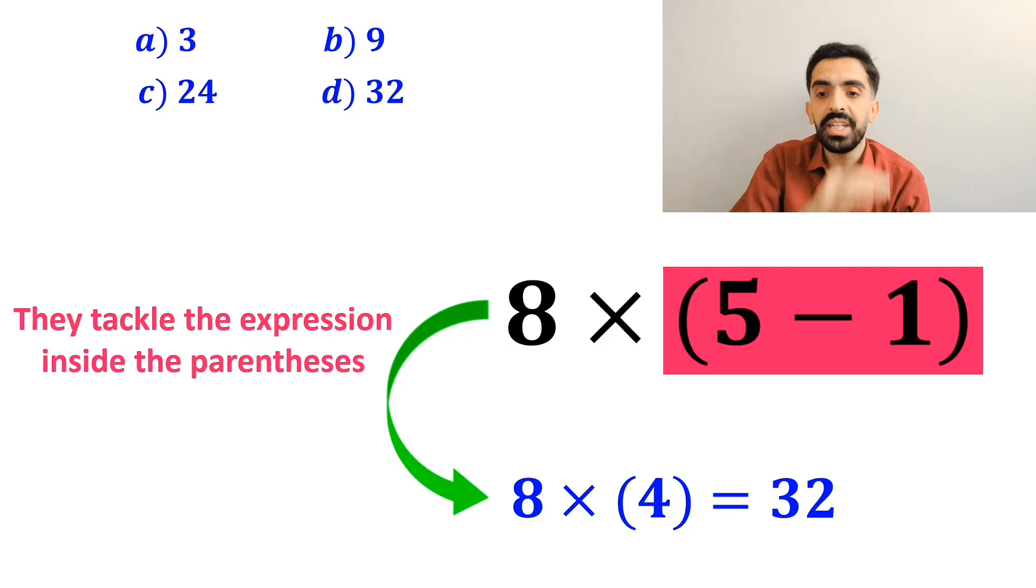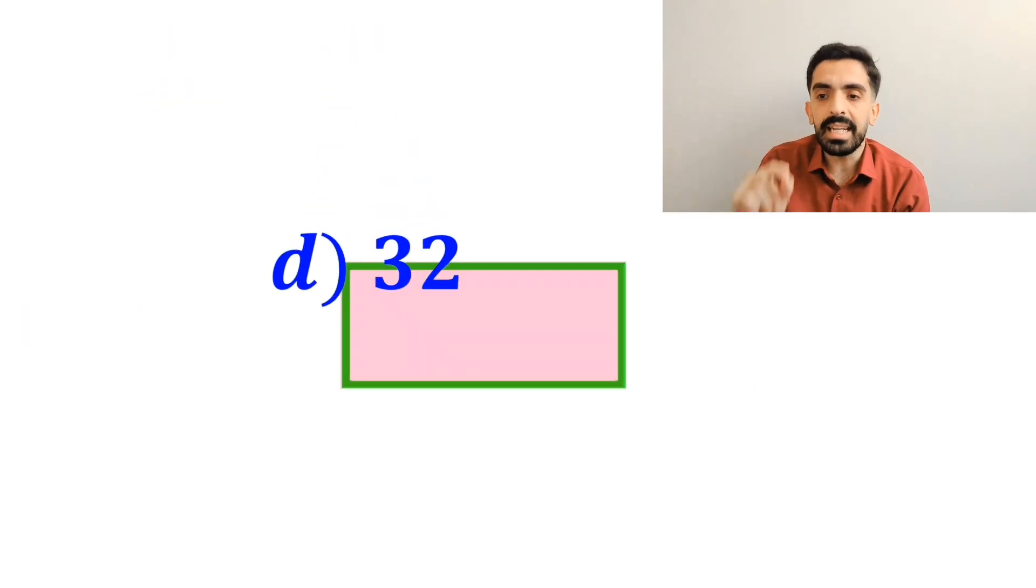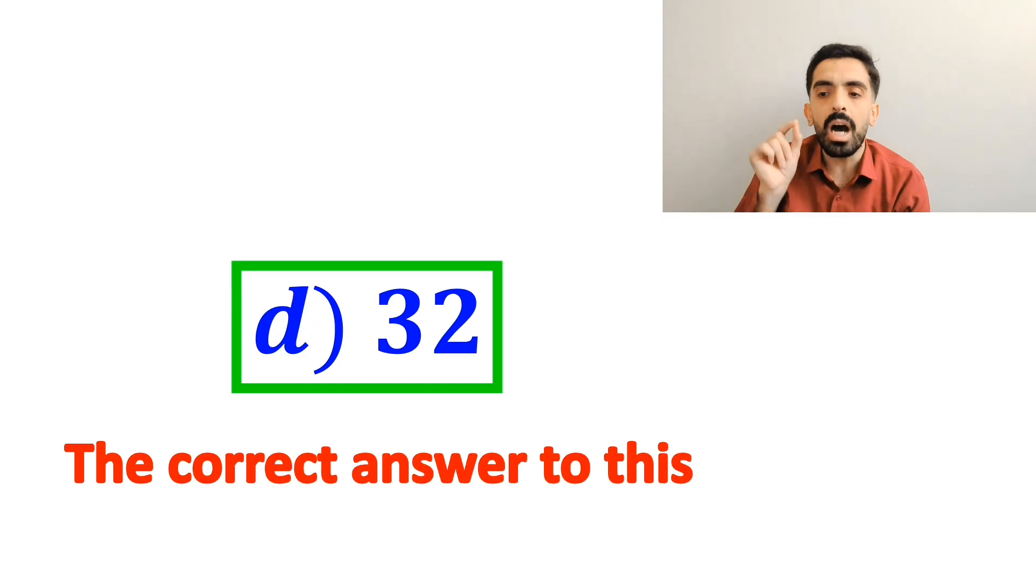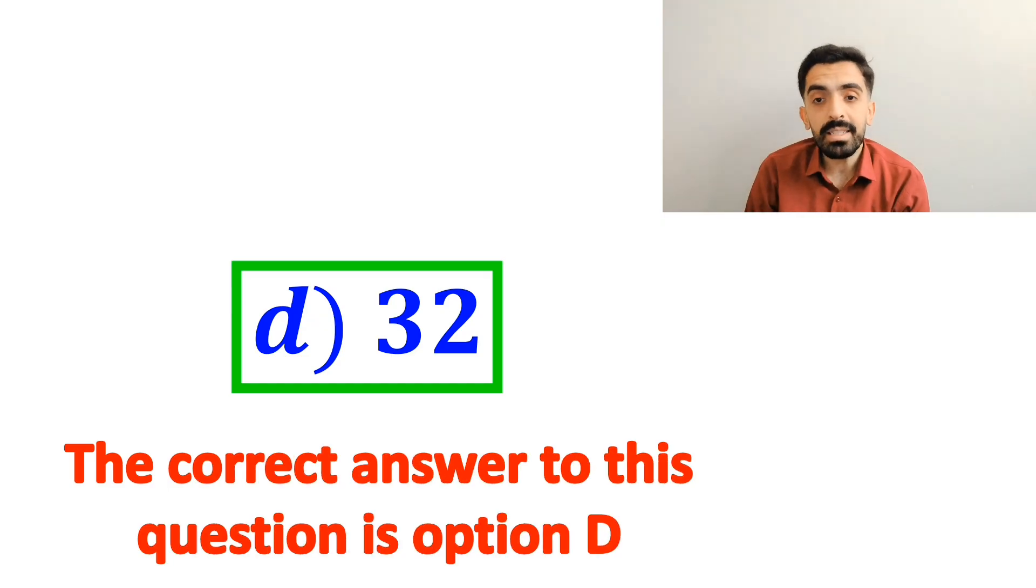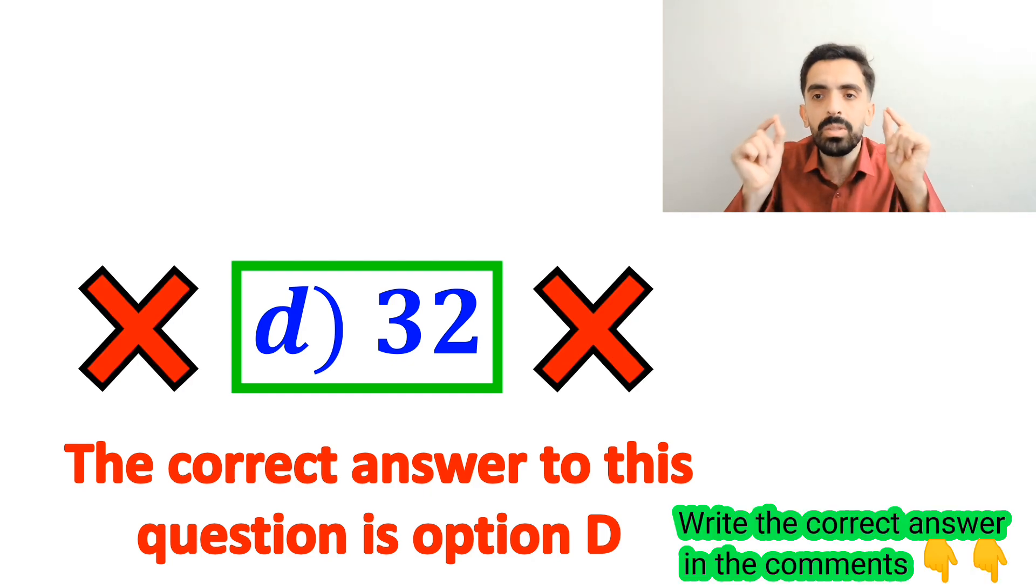Then, without any hesitation, they immediately say that the correct answer to this question is option D. But this answer is absolutely wrong.